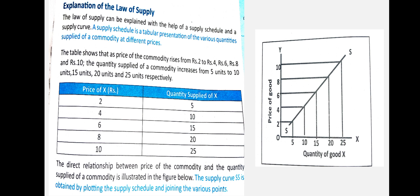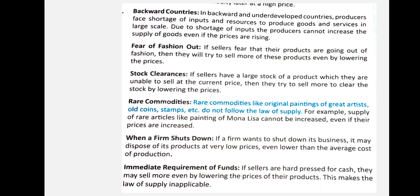Looking at the supply table: as price increases, market supply increases. This is the law of supply. Regarding the limitations of the law of supply — in backward and underdeveloped countries, producers face a shortage of inputs and resources to produce goods and services. Due to the shortage of inputs, the producer cannot increase the supply of goods even when prices are rising.